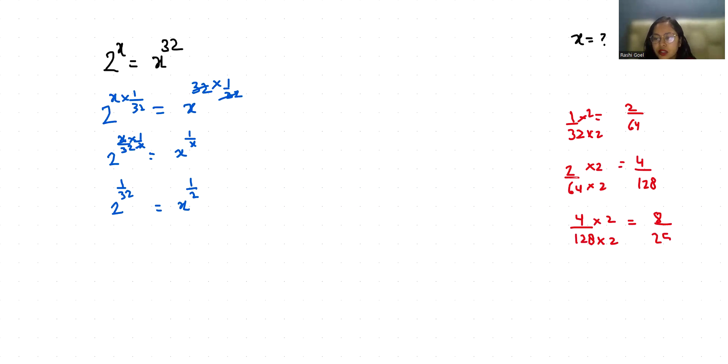So we can say that 1 by 32 equals 8 by 256. So I am going to replace: 2 power 8 by 256 equals x power 1 by x.